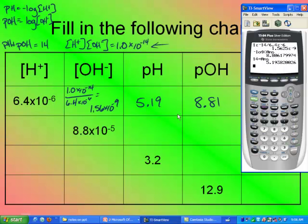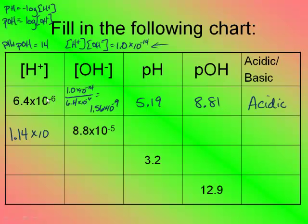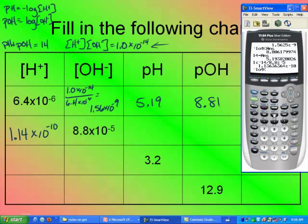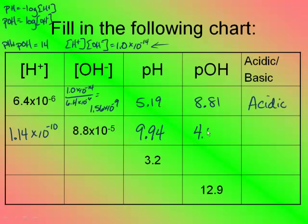Let's do the next one. I've got to solve for the H+ concentration from the OH-, so I'm going to take 1 times 10 to the minus 14 and divide by 8.8 times 10 to the minus 5, and I get 1.14 times 10 to the minus 10. Since that number is sitting in my calculator right now, I'm going to just go negative log second answer, and I get 9.94, and 14 minus 9.94 is 4.06. This is a number that's greater than 7, so therefore, it must be basic.